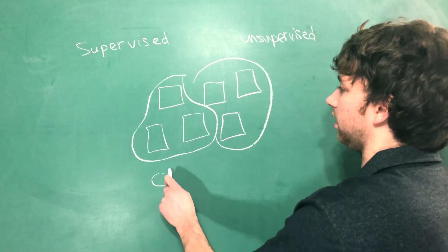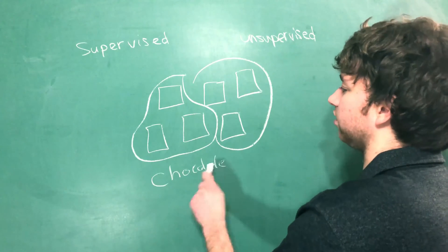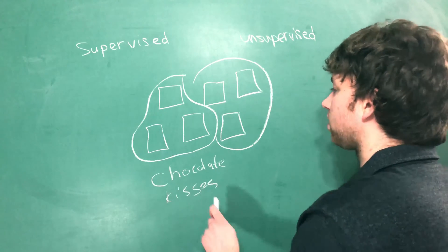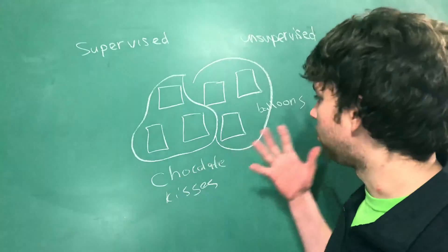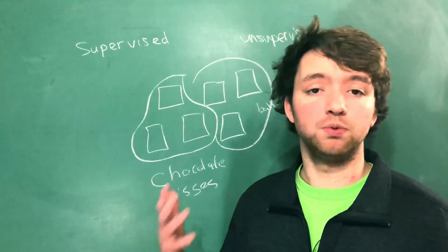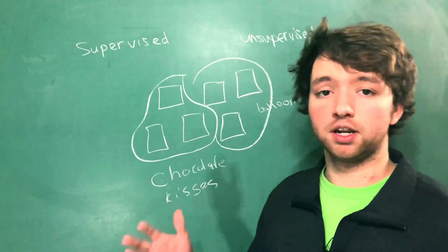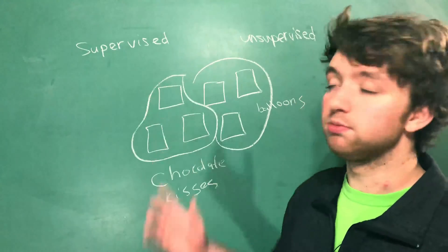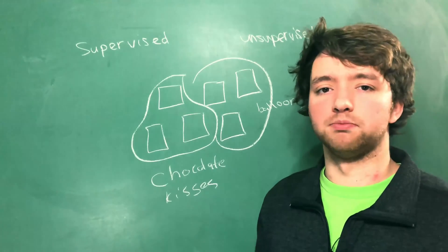This might be chocolate kisses because it kind of looks like one. So this is a picture of chocolate kisses and this is a picture of balloons. My definition for unsupervised learning was pretty terrible, but that's because I haven't gotten into unsupervised learning nearly as much as I have with supervised learning. As we go on in the series, hopefully I can give you guys a better understanding.